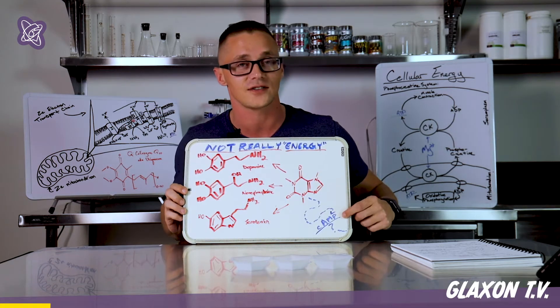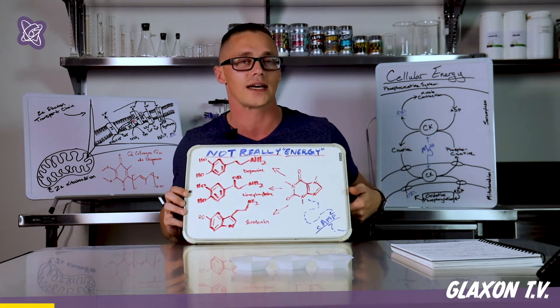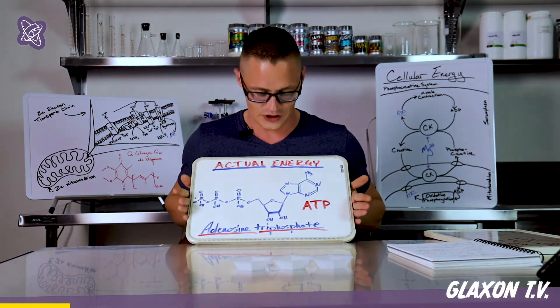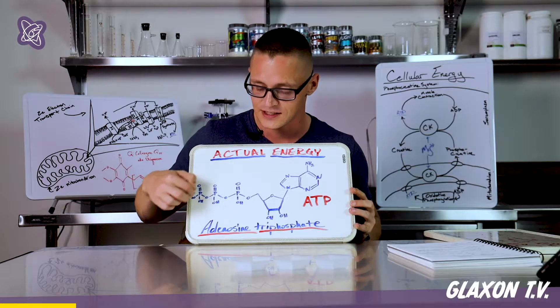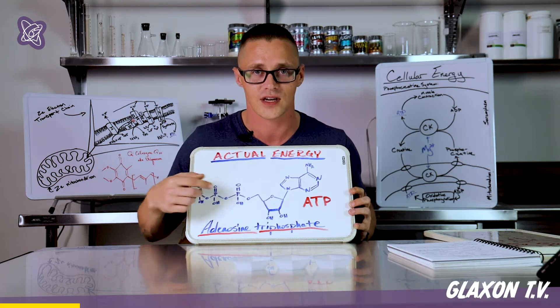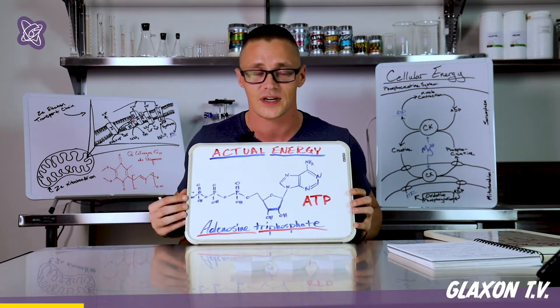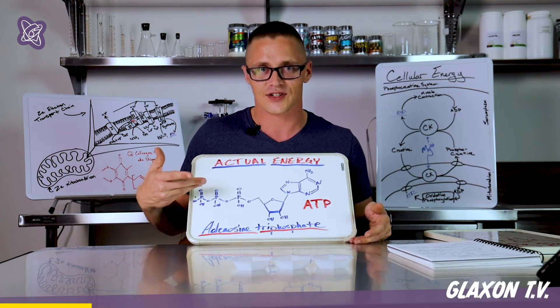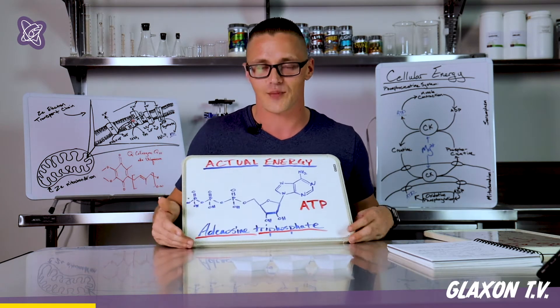But caffeine does have an effect on something called cyclic AMP. We'll get into that. Now, what really energy is in the body is this stuff right here, ATP. As you can see, the most important thing about this is it's got these phosphate groups over here on the side. It slings these around, and that's basically your currency of energy, and ATP is essentially the electricity that your body runs on.